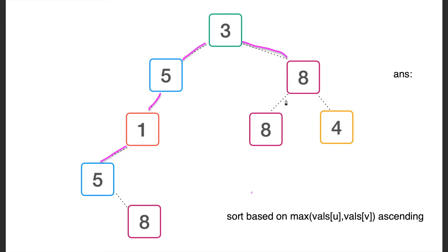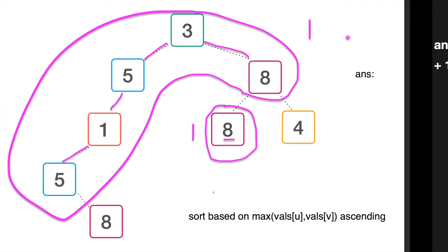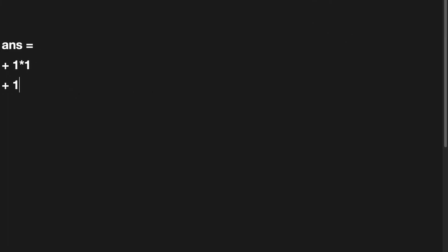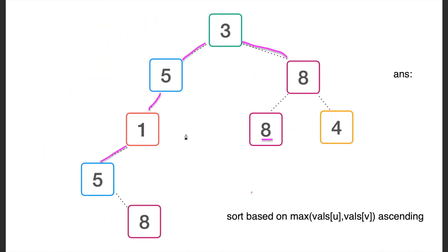We then add the next edge, also with maximum value 8. In one connected component the count of 8 is 1, and in the other connected component the count of 8 is also 1. So we add 1×1 = 1 to our answer, because there is a good path from this 8 to that 8. We add the edge and update our answer.